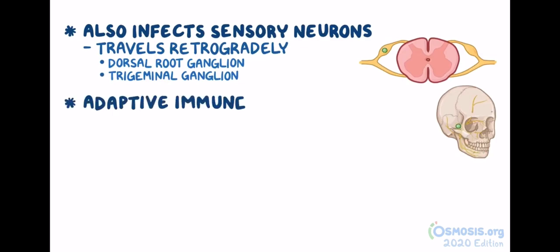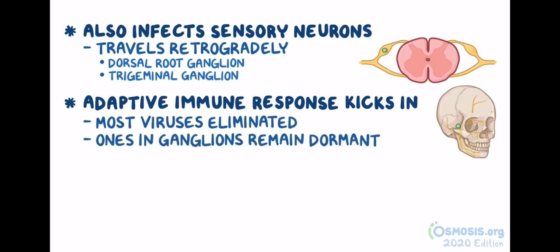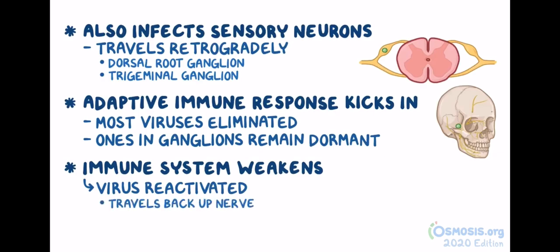Over time, when the adaptive immune reaction kicks in, most of the viruses in the body are eliminated, but the ones in the ganglia are spared and can remain dormant for many years. Most commonly, the virus establishes a latent state within the trigeminal ganglia and the dorsal root ganglia. Later on, if the immune system weakens due to aging, stress, or immunosuppressive therapy, the virus can be reactivated. It can then travel back up through the sensory nerve, anterogradely, to the skin, and cause an infection in the innervated dermatome — that's called herpes zoster, or shingles.